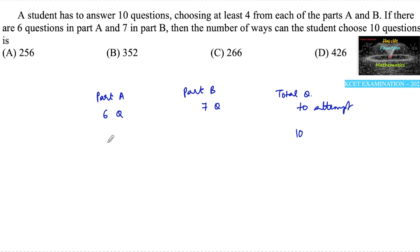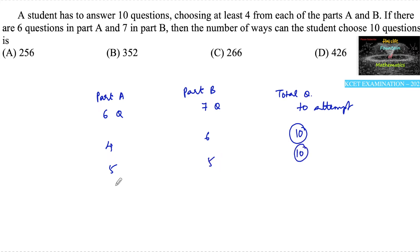If we select 4 questions from part A, then from part B he has to select 6 questions to get a total of 10. If we choose 5 questions from part A, then he has to choose 5 questions from part B. And if 6 questions from part A, then he has to select 4 questions from part B. These are the only three possibilities.